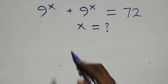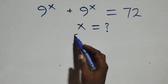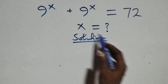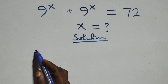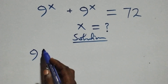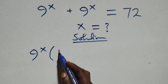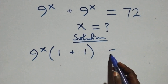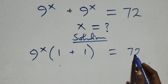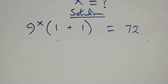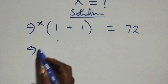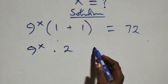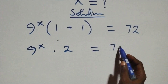Hello y'all, welcome. We are solving a nice exponential equation. From what we have here, we can factor 9 raised to power x out, giving us 9 raised to power x into bracket 1 plus 1, which equals 72 on this side.